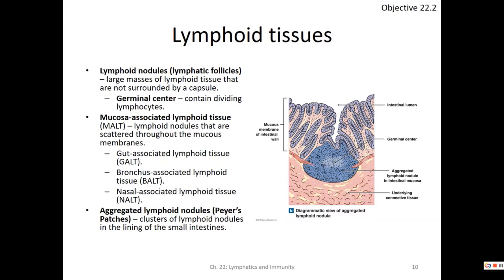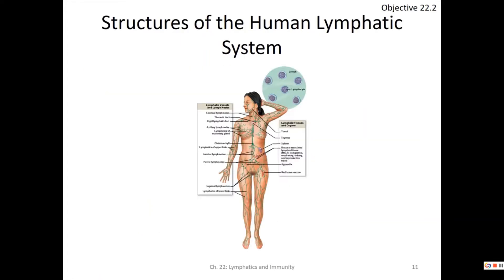Aggregated lymphoid nodules are lymphoid nodules in the small intestines — Peyer's patches. They prevent bacteria from the large intestine from sneaking into the small intestine, where they could release harmful chemicals, cause infections, or disturb digestion. All these lymphatic tissues are placed strategically throughout the body.